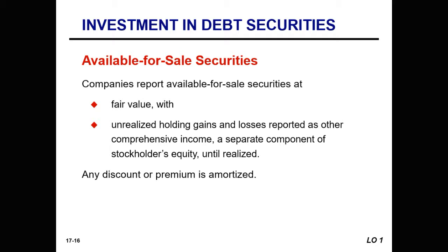At each reporting date, available-for-sale debt securities are reported at fair value with an adjustment to the unrealized holding gain or loss equity account. A fair value adjustment account is used to record the difference between fair value and amortized cost.